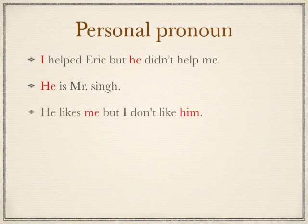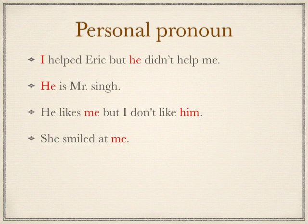He likes me, but I don't like him. Here, me is used in place of the object, so me is an object pronoun. Him is also an object pronoun. For the next example: She smiled at me. She is a subject pronoun, smiled is a verb, at is a preposition, and me is an object pronoun. We use object pronouns after prepositions — here, me is used after the preposition at.